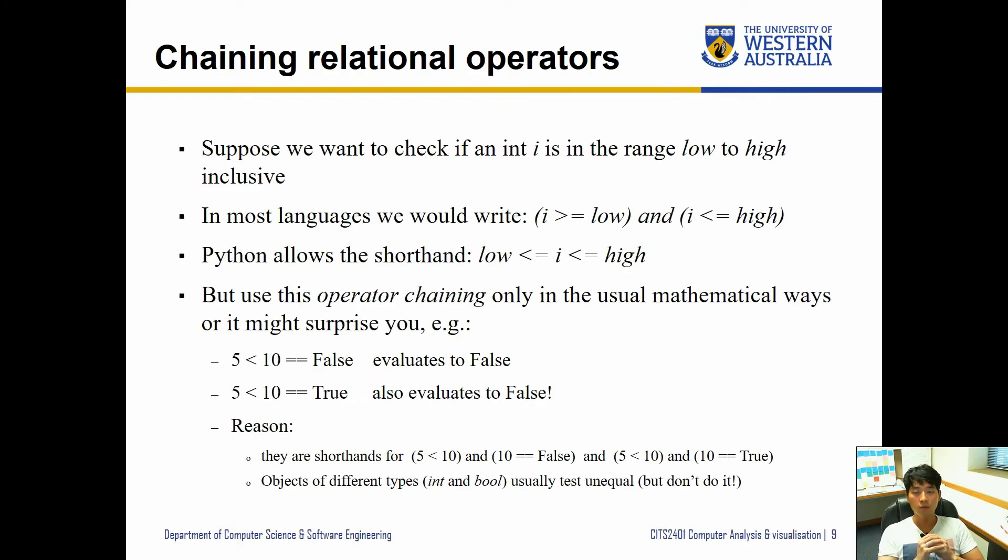We have seen that you can use multiple operators at the same time. In Python, it does allow chaining relational operators. For example, if we want to check if an int value i is in the range low to high inclusive, we can write i is greater than or equal to low and i is less than or equal to high. This is the syntax you'll normally use in most other languages like Java or C, but Python does allow a short version by typing low less than or equal to i less than or equal to high.